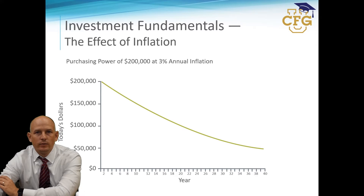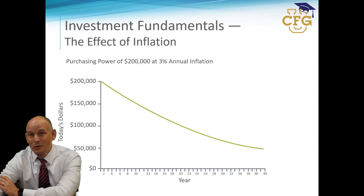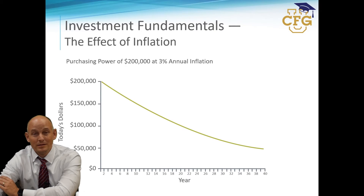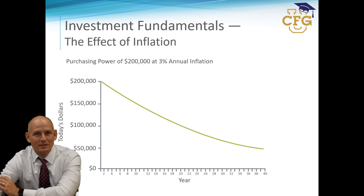An important concept to understand when it comes to investing is the impact of inflation. Inflation has the effect of reducing the purchasing power of your dollars over time. According to the U.S. Department of Labor, the average annual inflation rate since 1914 has been approximately 3%. So at a 3% annual inflation rate, something that costs $100 today would cost $181 in 20 years. Your purchasing power is definitely going down.